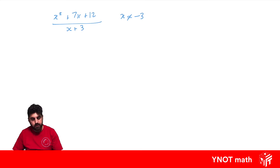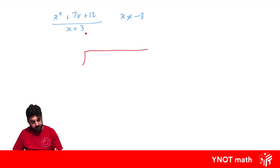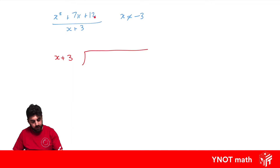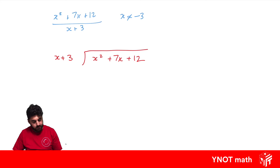We're going to do this with long division. We write our division sign — our divisor is in the denominator, so x plus 3 goes out the front, and our numerator goes inside: x squared plus 7x plus 12.